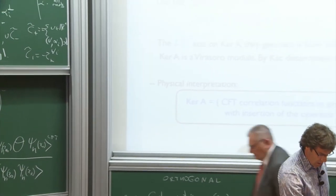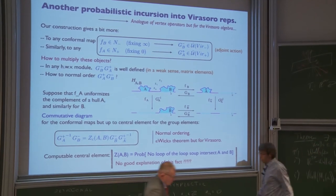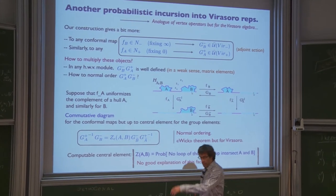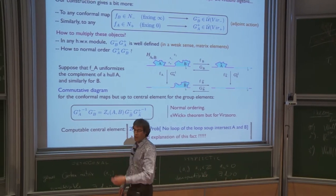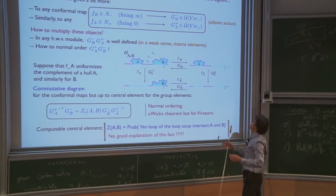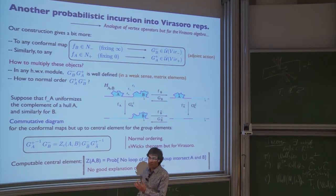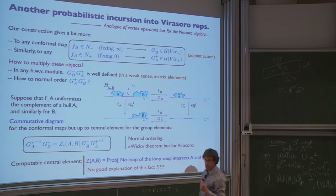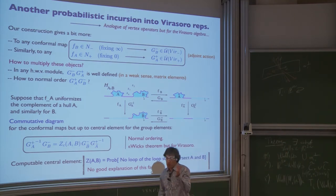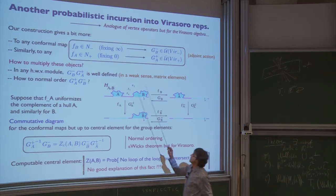The next point I want to mention is the connection with the Brownian loop soup, which I am not sure I really understand. If you look at a conformal map which fixes infinity, you can view it as an element of n_minus. And then to any highest-weight Virasoro module, you can associate an element of the universal enveloping algebra of the negative part of the Virasoro algebra which implements this conformal map — meaning that by adjoint action on the primary operators, it implements the conformal transformation of that operator under that conformal map. You can do it for any operator, and this series will converge in most cases.